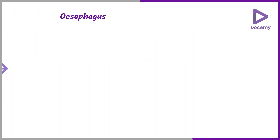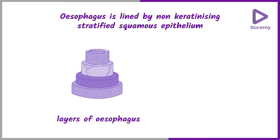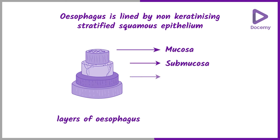The esophagus is lined by non-keratinizing stratified squamous epithelium, and its wall has four layers: namely the mucosa, submucosa, muscular layer, and fibrous layer.